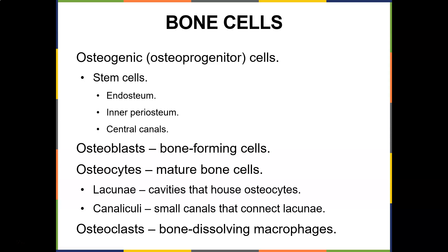Importantly, osteocytes are strain sensors. When a load is applied to the bone, it produces a flow in the extracellular fluid of the lacunae and canaliculi. Osteocytes have a solitary cilium that senses this fluid flow, stimulating them to secrete biochemical signals that regulate bone remodeling. This is why walking, weightlifting, and resistance exercises are important — and why astronauts lose bone density, because without gravitational stress, their osteocytes are not stimulated to trigger bone growth.